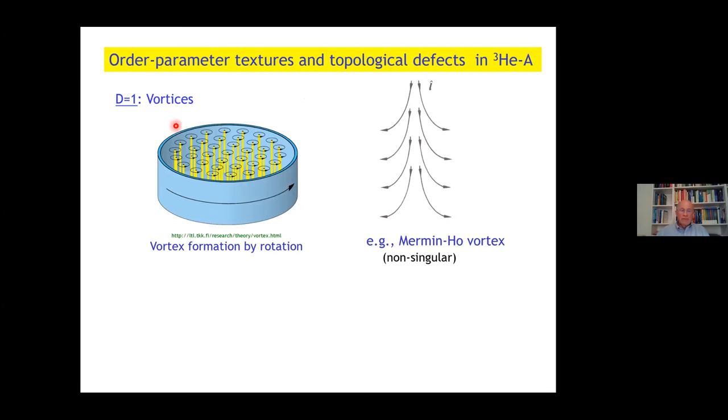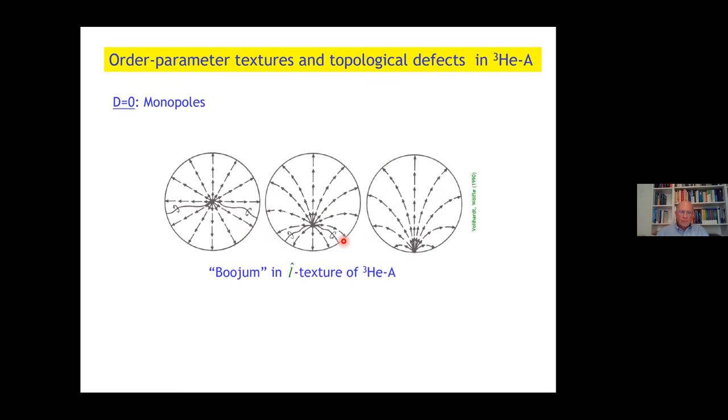There are one-dimensional defects, vortices, they can be generated by rotating. In a neutral superfluid like helium-3, rotation is the same as applying a magnetic field in a charged superfluid. There's a host of vortices, for example, non-singular, singular, there's a whole zoo of them.